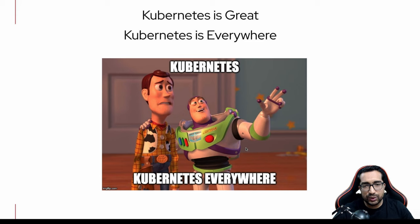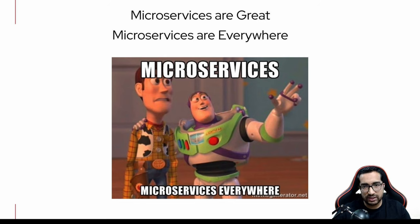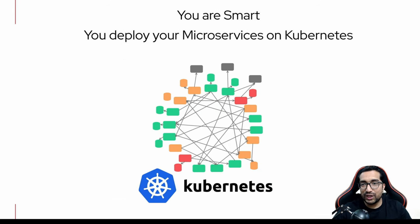I think we all agree that Kubernetes is the de facto standard for container orchestration. It's been more than eight years now since Kubernetes first launched — Kubernetes is everywhere. And so are microservices; they are ubiquitous, and microservices is not a new concept. It has been around for more than two decades in different forms. If you're a developer or an architect, you would be managing a lot of microservices, and if you're smart, you'd be deploying them on Kubernetes, which provides a very nice way for container orchestration.